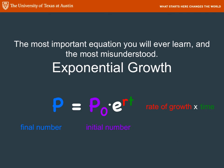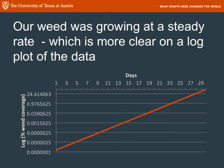The final number of whatever you're counting is equal to the initial number times e to the rt, where r is the rate of growth and t is time. Our weed was growing at a very steady rate the whole time, which is much more clear if you plot it on a log plot — and that's how that equation plots.